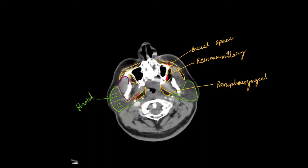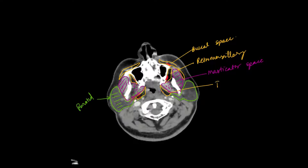Another space, not discussed as often, is the masticator space — the masseter muscle, temporalis, and if you go up, all of them combined will form the masticator space, and that's how you chew. I'll just note parapharyngeal here.